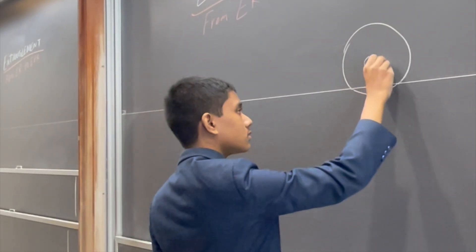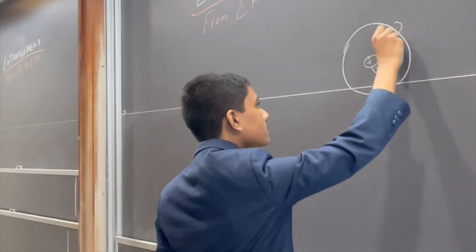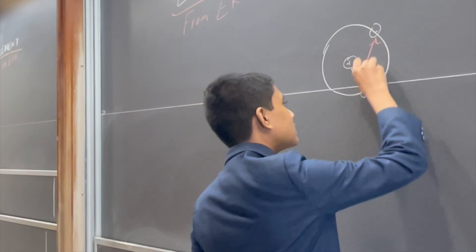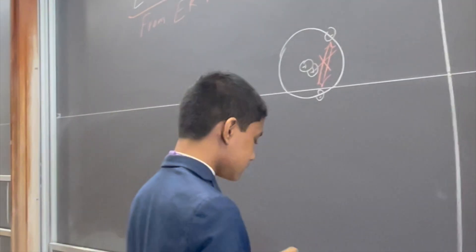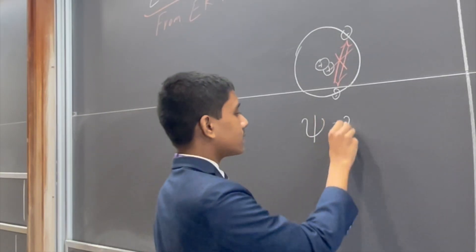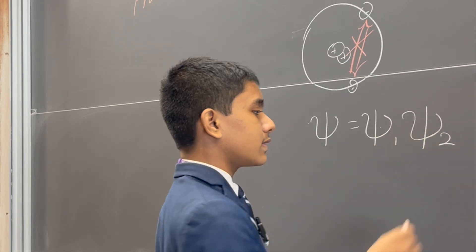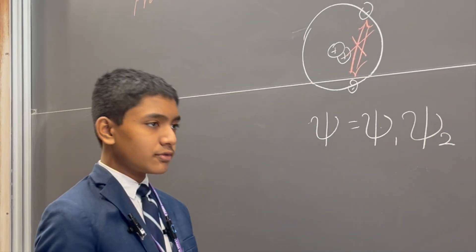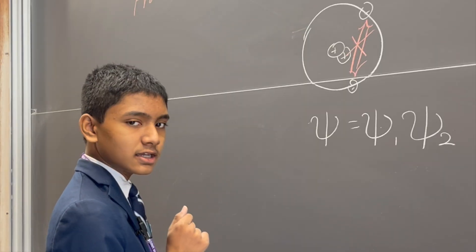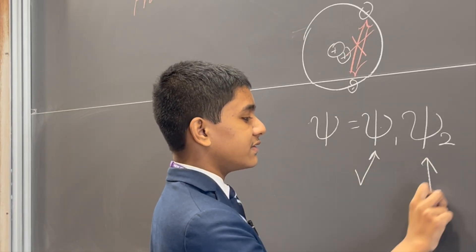So, what is entanglement actually saying? Remember that when we were talking about the helium atom, we said if the two electrons didn't interact with one another — if we pretend that this interaction didn't exist — then the wave function describing both of them would have just been the product of the wave functions describing the individual particles independently, as they would have been in the hydrogen atom. What counts is that this is a product. It's been factorized.